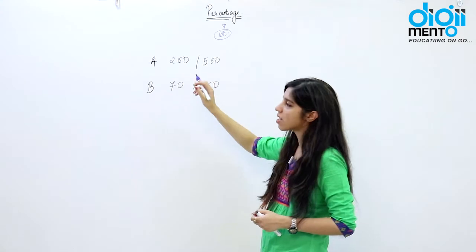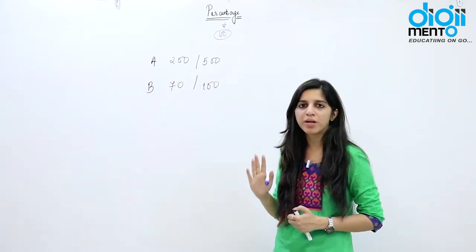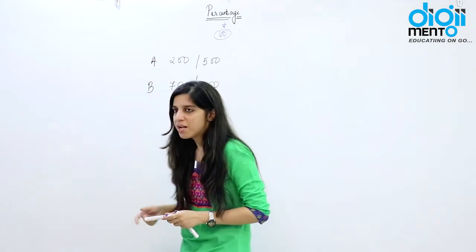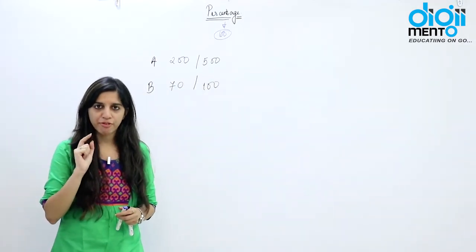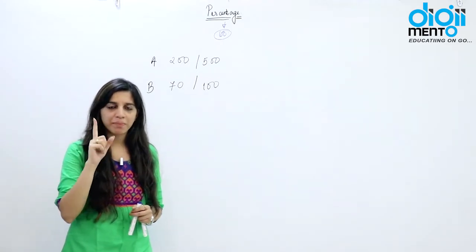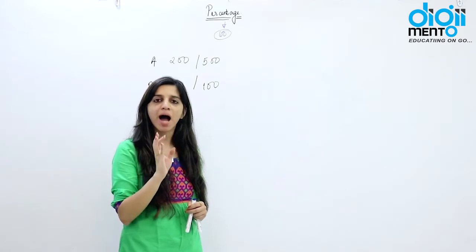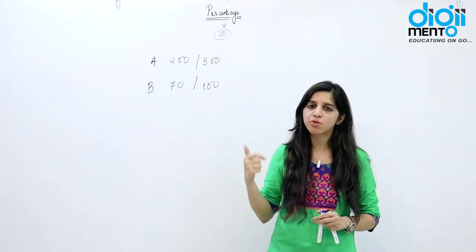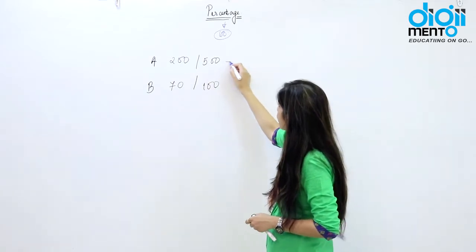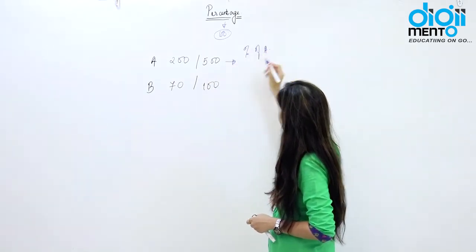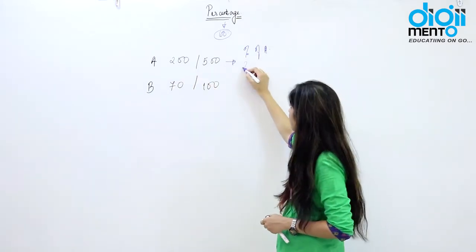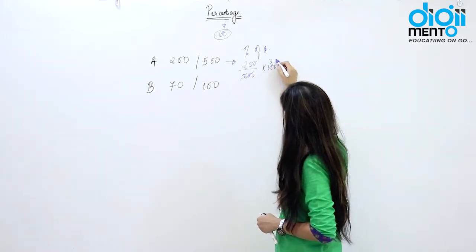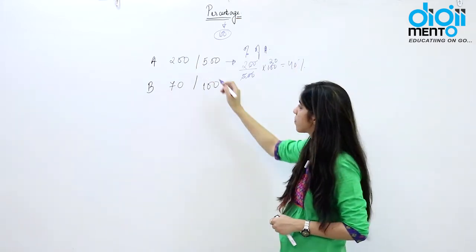Now, how do you find a percentage? If you are given a fraction, you multiply that fraction with 100. A fraction is with reference to 1 — every fraction is a part of a whole. If you want to scale it up to 100, multiply by 100. So for student A: 200/500 × 100 = 40 percent. So this student scored 40 percent marks.